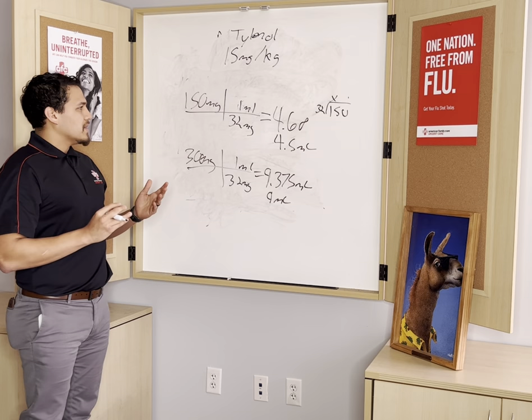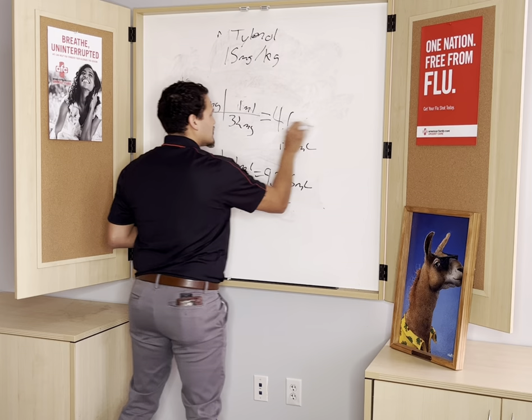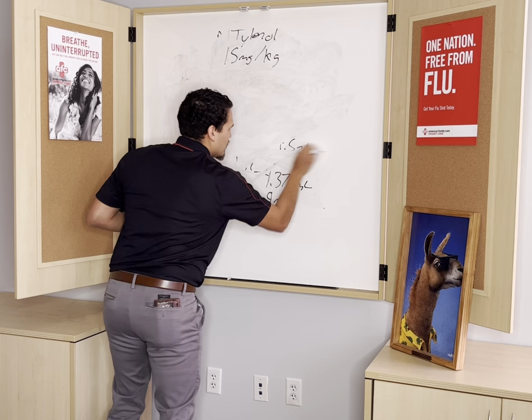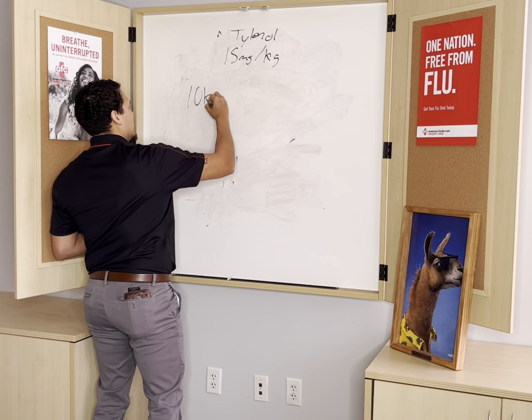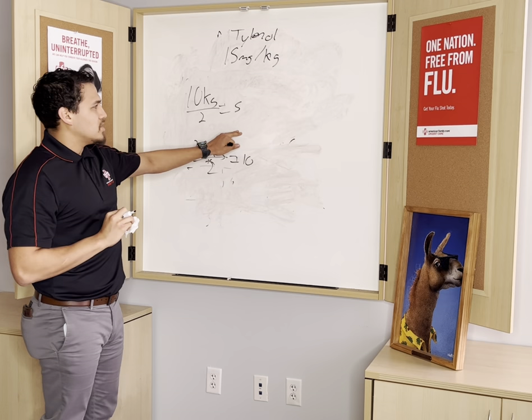Here's a quick, simple way to estimate the Tylenol dose: take your weight in kilograms and divide by 2. So for our 10-kilogram kid, divide by 2 — that's about 5 mLs. For our 20-kilogram kid, divide by 2 — that's 10 mLs. These are pretty good estimates to help guide you if you went a little too high or too low.